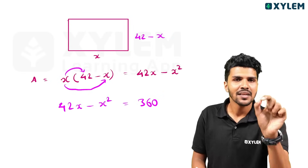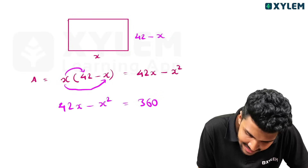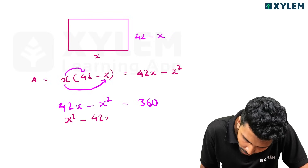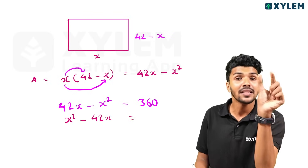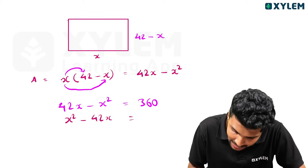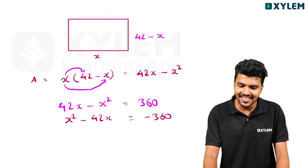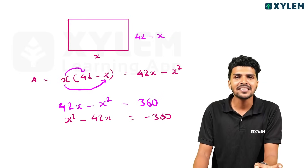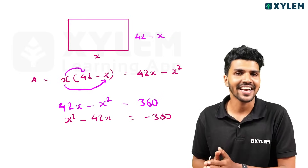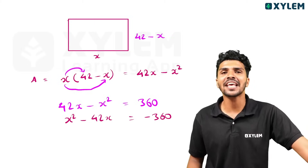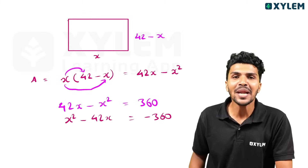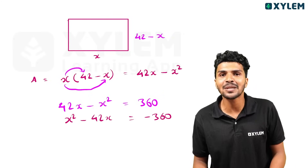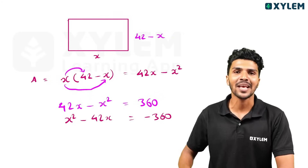Now you can solve for the value of X from X² minus 42X plus 360 equals 0. Please comment your answer below. If you liked this video, please like it. Goodbye!